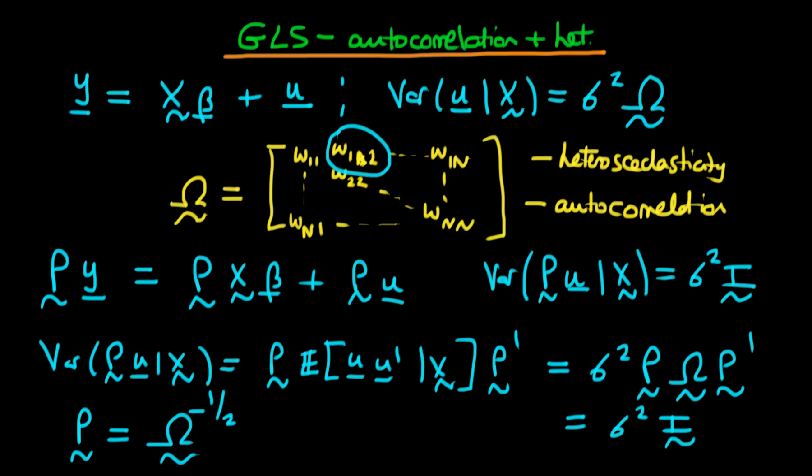So actually, we can apply exactly the same transformation as we used before in the presence of autocorrelation. It's just that this transformation isn't quite going to be as neat as it was before, because omega to the power minus one-half is going to be a matrix which has both diagonal and off-diagonal components, as opposed to what it was before when we just had diagonal components.